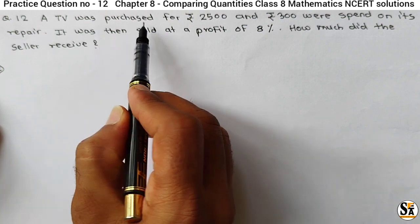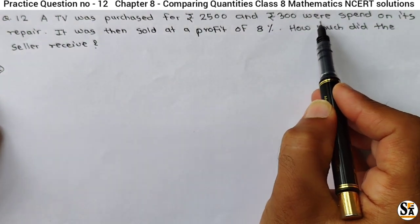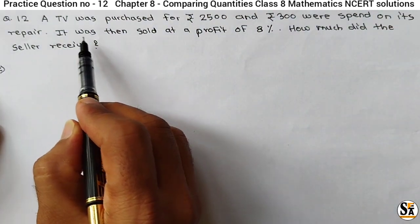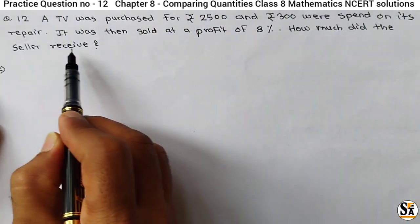Question is given: A TV was purchased for Rs 2500 and Rs 300 were spent on its repair. It was then sold at a profit of 8%. How much did the seller receive?